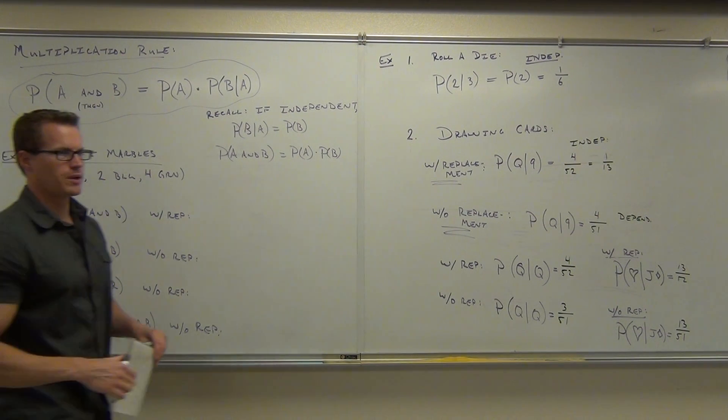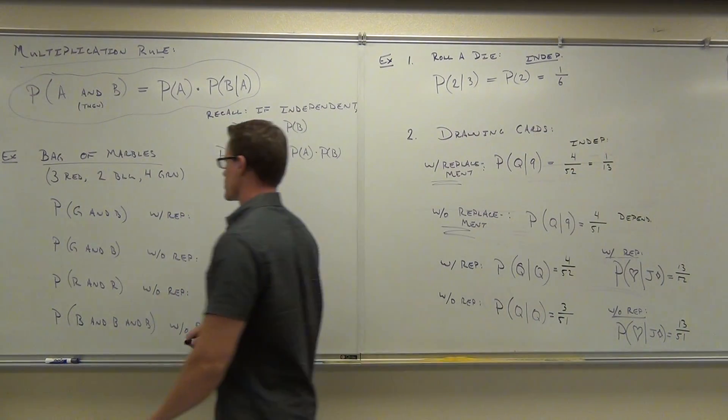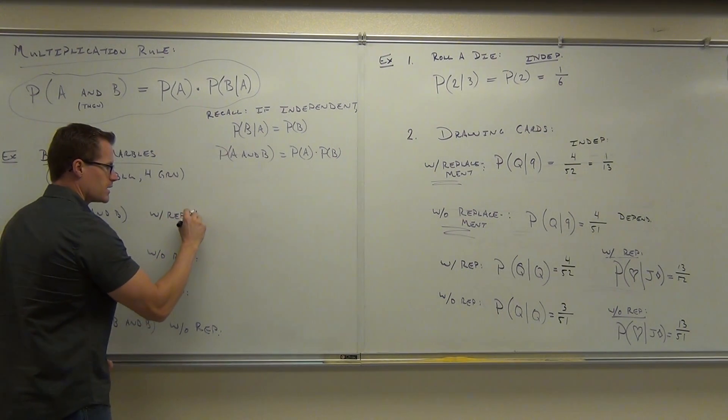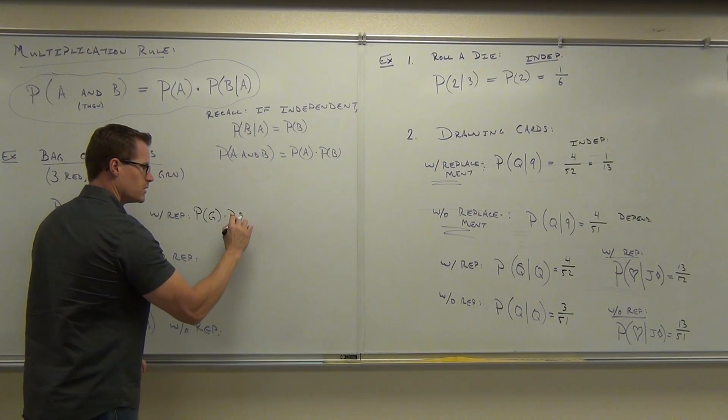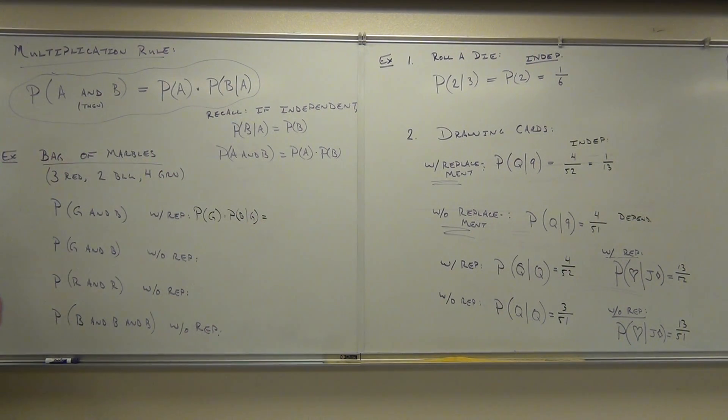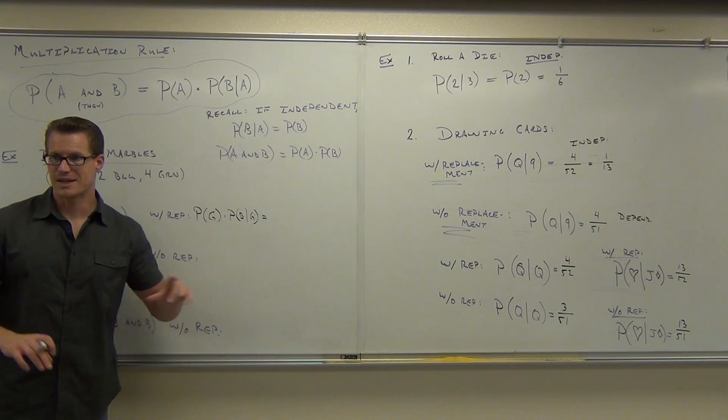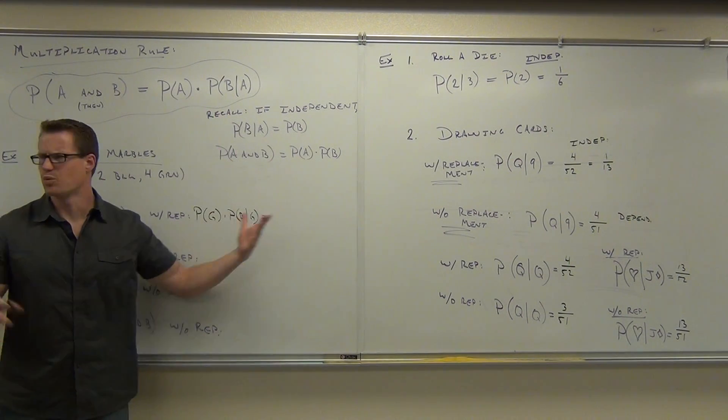Okay, probability of green and blue with replacement. With replacement means you draw the marble out, you put the marble back, then you draw again. So with replacement, what's the probability of selecting a green marble? Four and nine. Why nine? What we're looking for is the probability of green times the probability of blue, given you picked out a green one. Here's how you write this out in math speak. You just need to write the same thing all these times and be able to determine with replacement or without replacement.